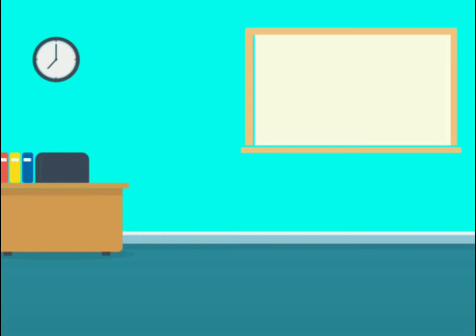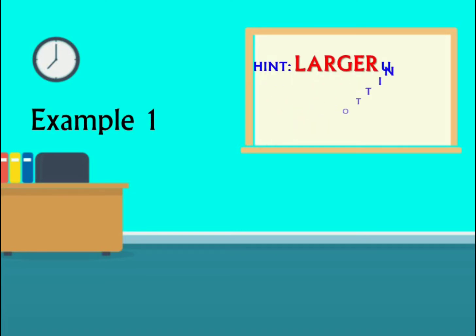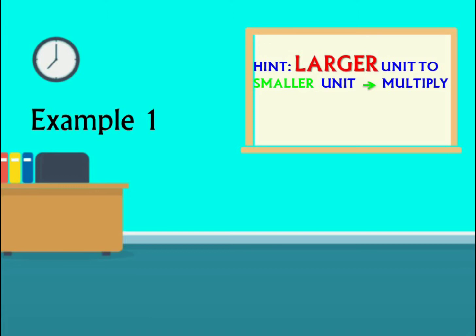The length of this room is 5 meters 45 centimeters. Let's convert the length of this room to centimeters. Example 1. Whenever you are converting from larger units to smaller units, you multiply.